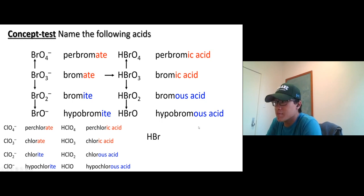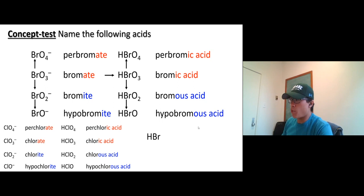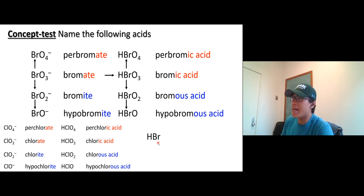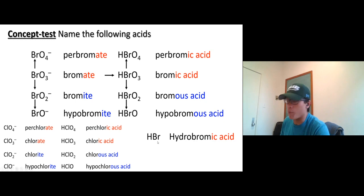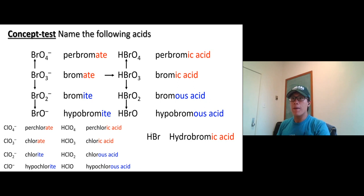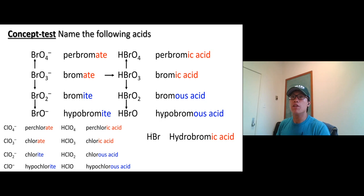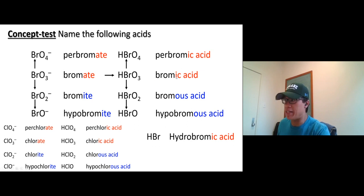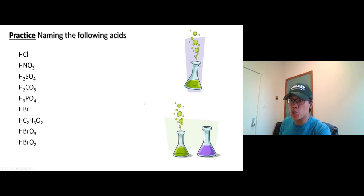Important distinction: HBrO3 is bromic acid (an oxyacid), but HBr has no oxygen — it is a hydro acid, called hydrobromic acid. Similarly, HCl has no oxygen, so we don't call it chloric acid — it's hydrochloric acid. Oxyacids and hydro acids are totally different families with different properties. Try the practice problems on your own and check with me in the next video.